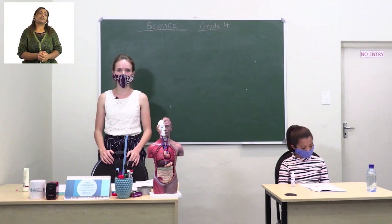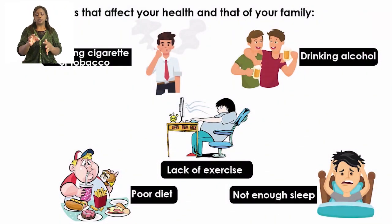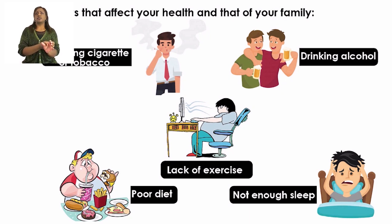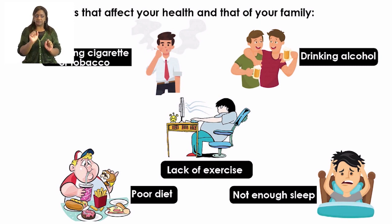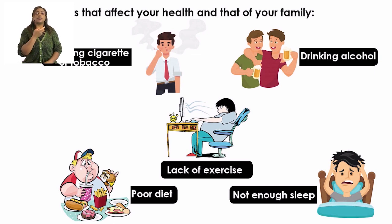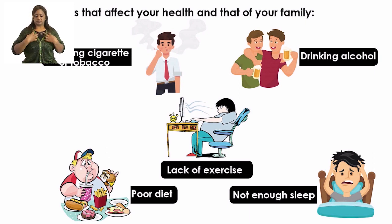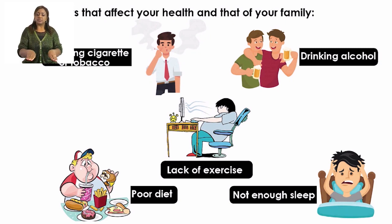Let's look at the first factor on page 12: the smoking of cigarettes or tobacco. When you smoke, your lungs are affected and weakened, meaning they can more easily be affected by germs and you can more easily become sick. When someone in the family smokes, the rest of the family inhales the smoke and fumes, so their lungs weaken as well. Smoking can also cause diseases such as lung cancer, asthma, and lung infections.